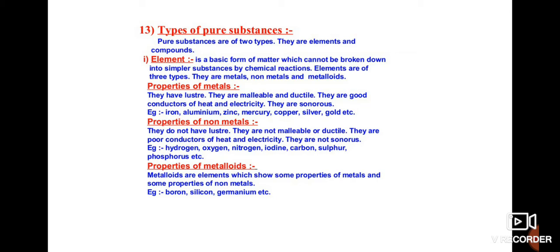Metals have luster; they are malleable and ductile. They are good conductors of electricity as well as heat, and they produce sound when they are struck. Some common examples of metals are iron, aluminium, zinc, mercury, copper, silver, and gold.